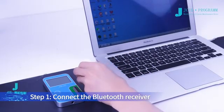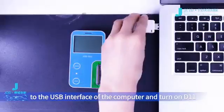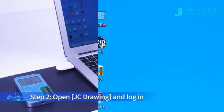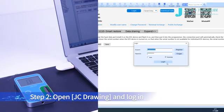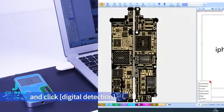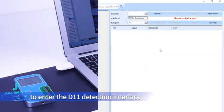Step 1: Connect the Bluetooth receiver to the USB interface of the computer and turn on D11. Step 2: Open JC drawing and log in. Open the point bitmap of the model to be measured and click Digital detection. Enter the D11 detection interface.